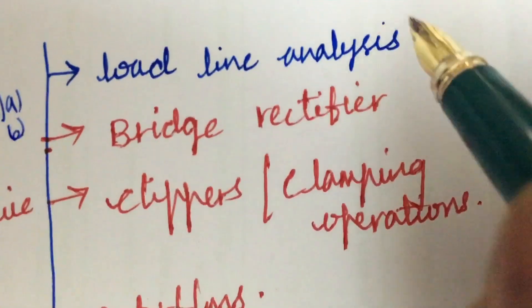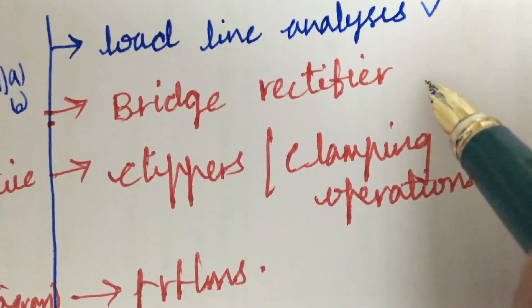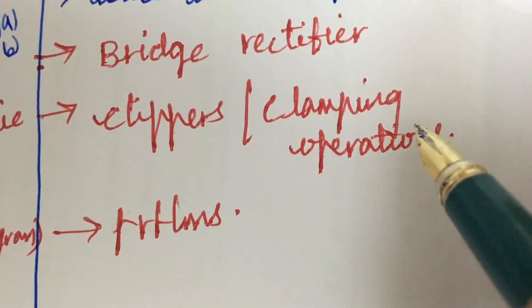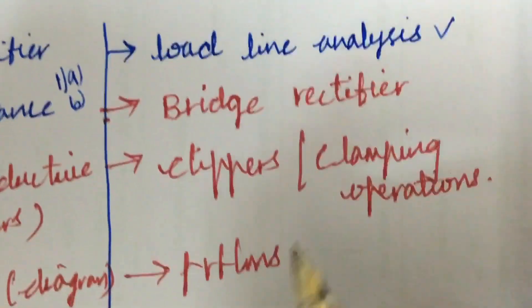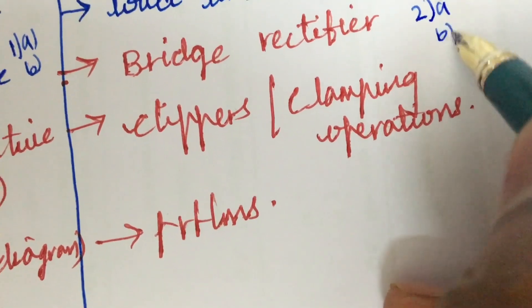Later, the load line analysis and the problems related to it, and the bridge rectifier along with its neat diagram and its applications, and the clippers and the clamping operations, and the problems related to entire concepts. From this part we can expect 2A as well as 2B.